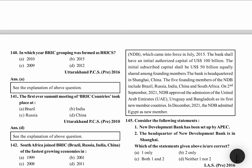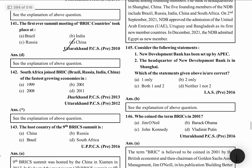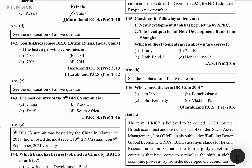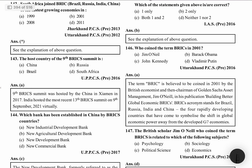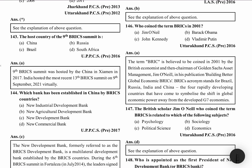The first ever summit of BRICS countries was held in Russia. South Africa joined BRICS — Brazil, Russia, India, China — as one of the fastest growing economies. The 9th BRICS summit was held in China in 2017. Which bank has been established by BRICS countries? It is the New Development Bank, NDB, whose headquarter is in Shanghai.